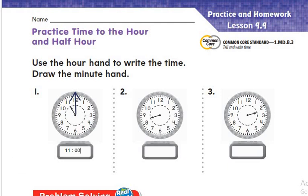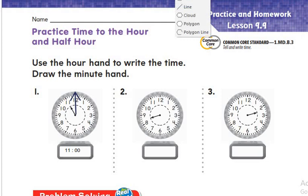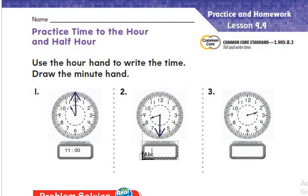Let's go to number 2. Here the hour hand points between 8 and 9, so it is half past 8, which is 8:30. The minute hand will point to number 6. The time is 8:30.